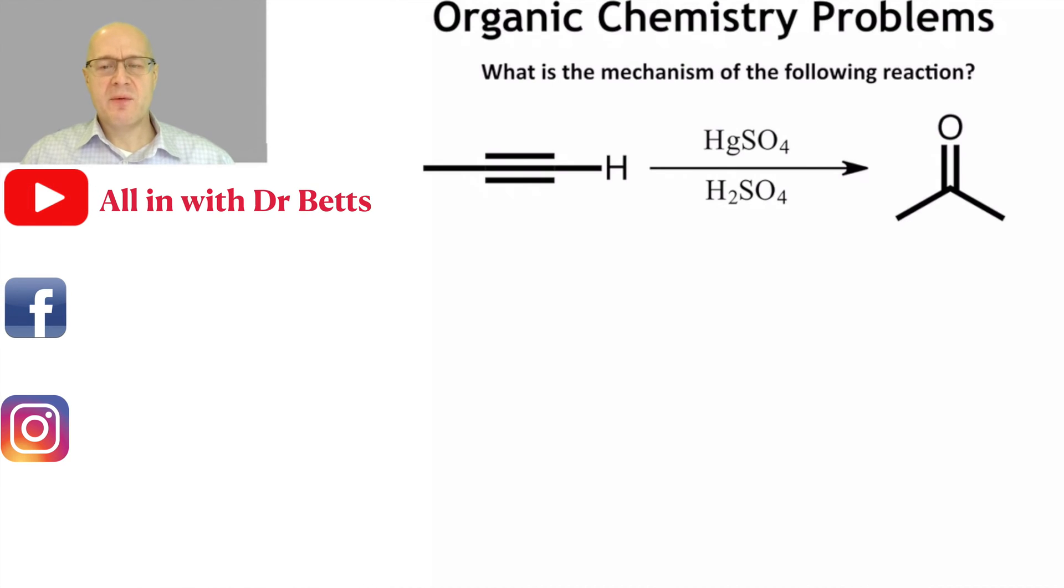Today, we're going to react mercury sulfate in the presence of sulfuric acid with a terminal alkyne to form a ketone.